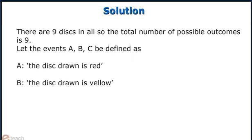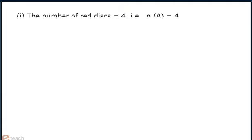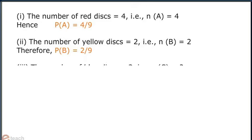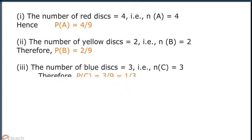Let the events A, B, C be defined as shown. 1. The number of red discs is equal to 4, hence probability of A is equal to 4 by 9. Similarly, the number of yellow discs is 2, so the probability is equal to 2 by 9. Number of blue discs is equal to 3, so probability is equal to 3 by 9, that is 1 by 3.